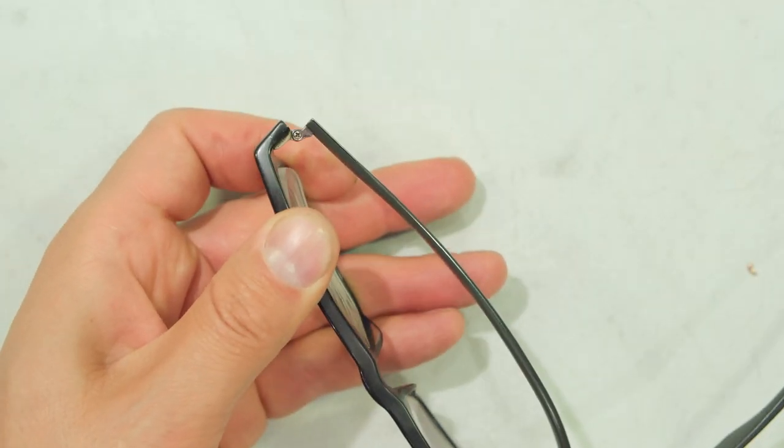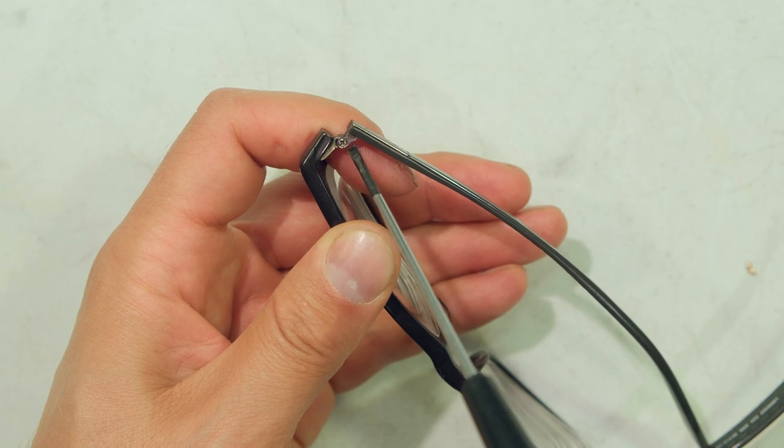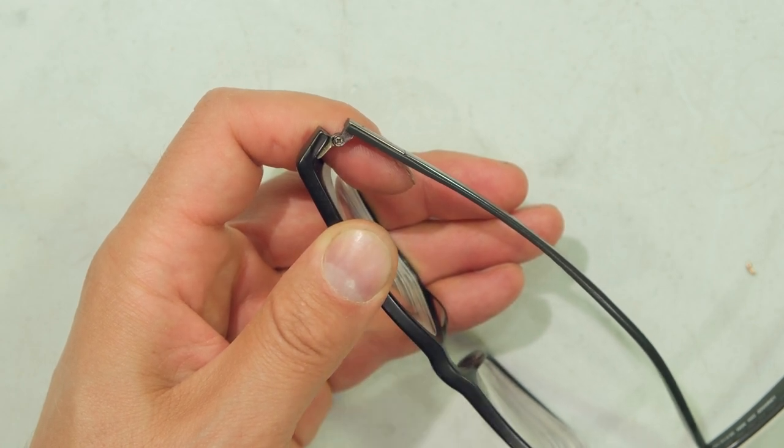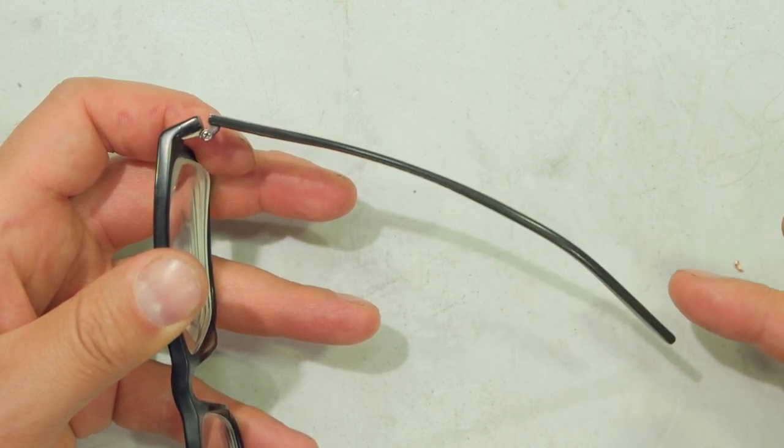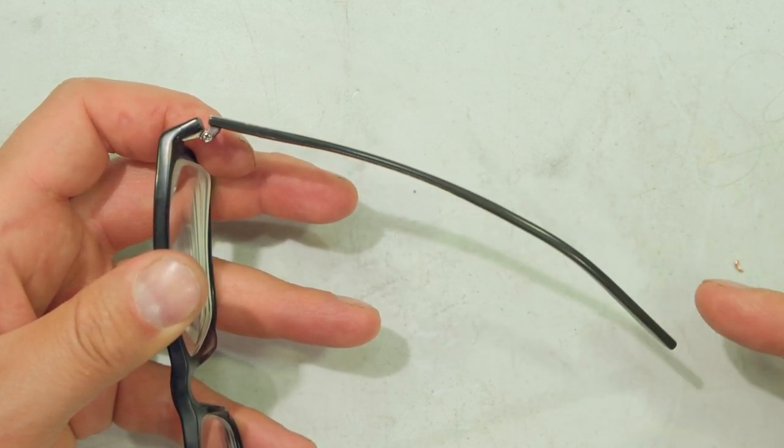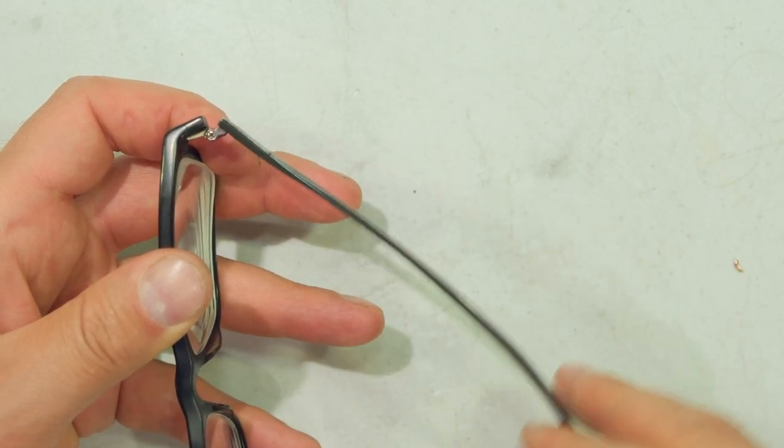See, it does not move. So in some cases, it just requires a slight nudge on that screw. Right, so there you can see it is tight. Even if I try and move it, you can see that the temple is basically bending and it's not even turning there. So it is pretty tight.